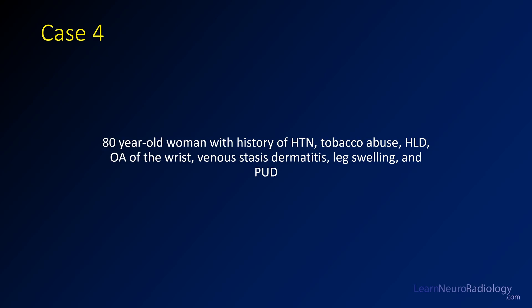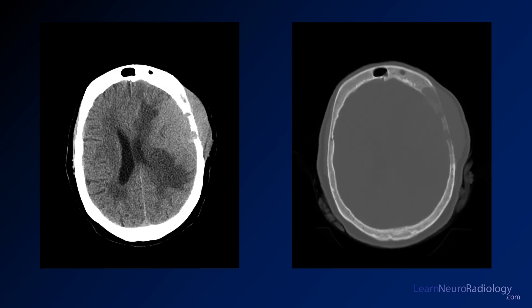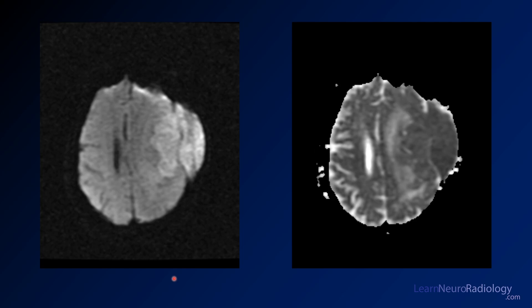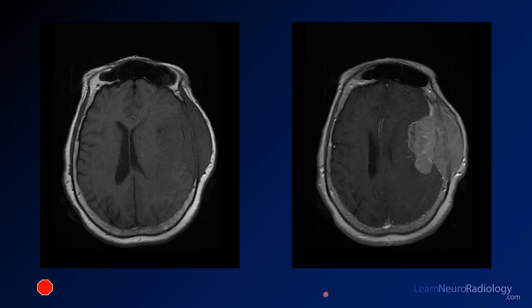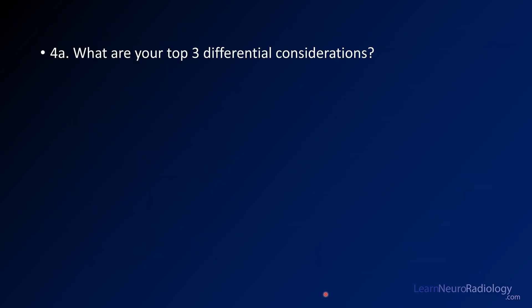Case four is an 80-year-old woman with multiple medical problems. We see images from a CT of the brain in the brain window and then also in the bone window. The patient went on to have an MRI — this is DWI on the left and ADC on the right, T2 on the left and FLAIR on the right, and pre and post contrast images. By now you should be thinking about your potential diagnoses — this is a differential case, so what are your top three differentials?